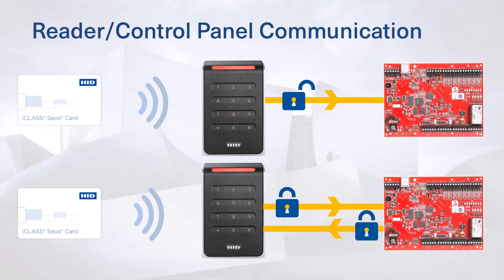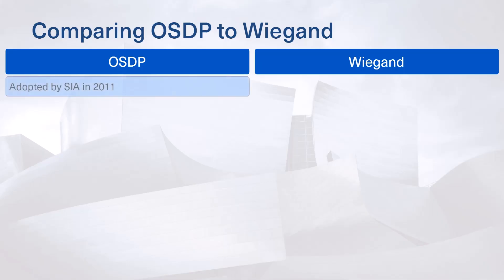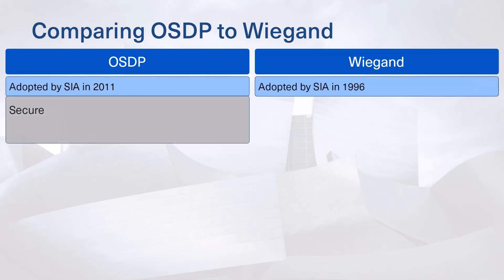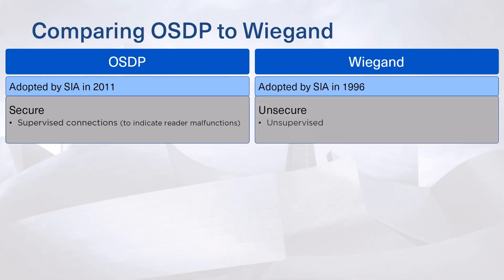OSDP version 2 encrypts all data transmitted between readers and compatible control panels using the secure channel protocol. OSDP was adopted by the SIA in 2011. The protocol monitors connections to indicate reader malfunctions, and OSDP version 2 encrypts all data communication using the secure channel protocol.